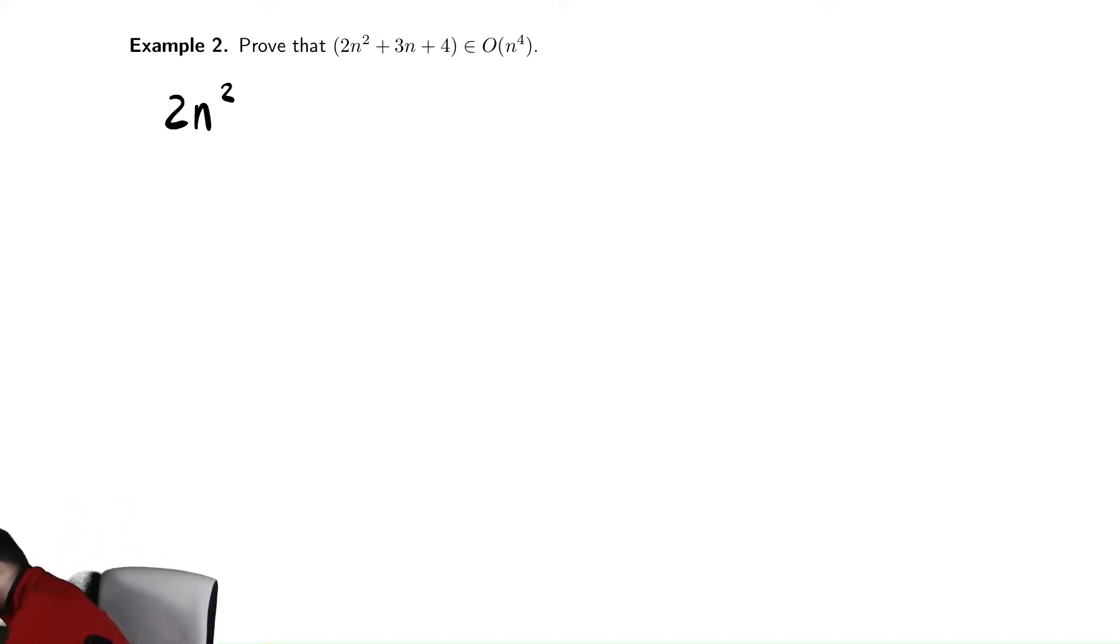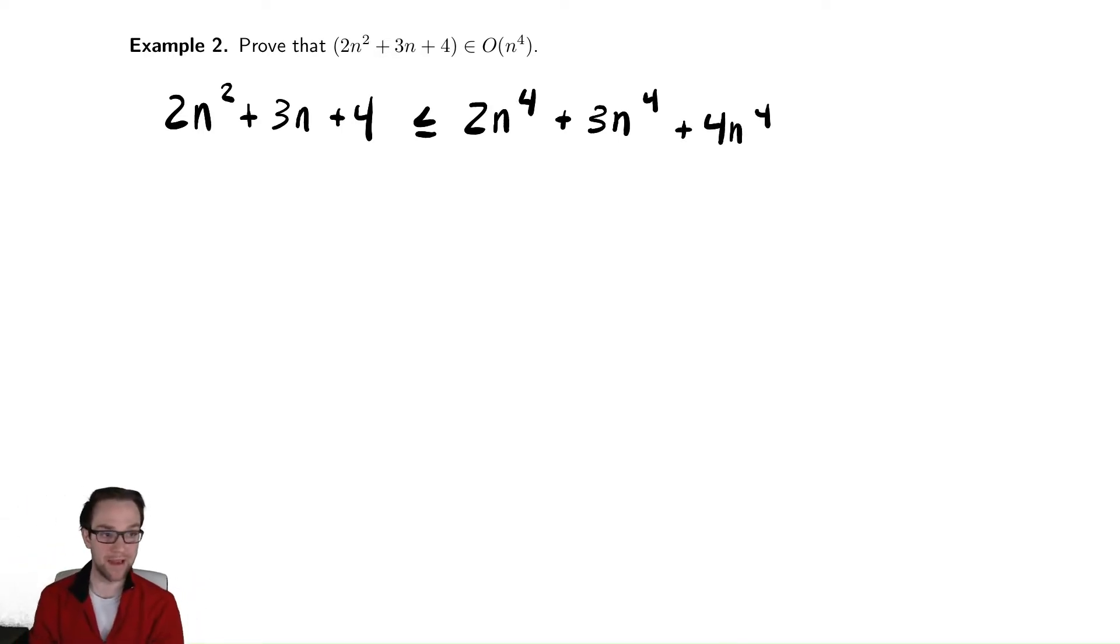So we start with the given function, 2n squared plus 3n plus 4, and with what it's asking us to show, we identify which terms are lower order than the thing we are looking at. All three terms, 2n squared, 3n, and 4, are all smaller than n to the fourth. So I'm going to replace each of those terms with equivalent higher order terms. We keep all of the constants out front the same, but increase the corresponding power of n.